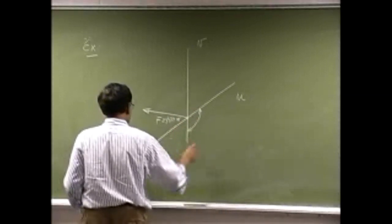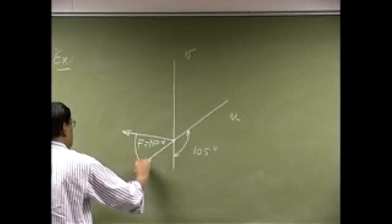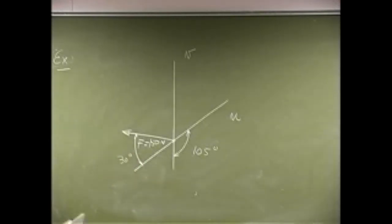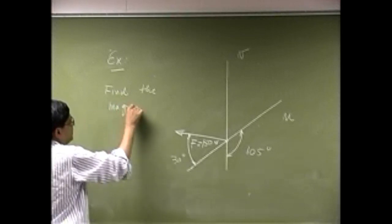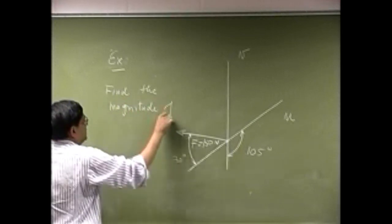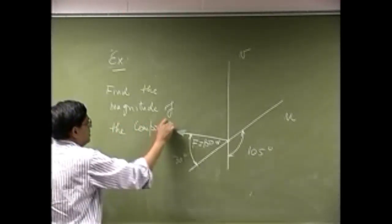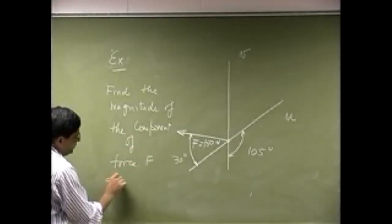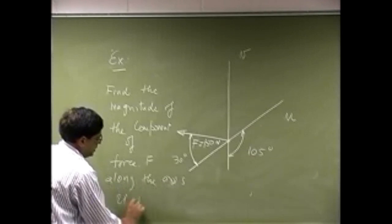That means we are looking at this angle, that's 105 degrees. Then we also know the angle between the force and one of the axes, and that's 30 degrees. And the question here is to find the magnitude of the components of force F along the axis u and v.